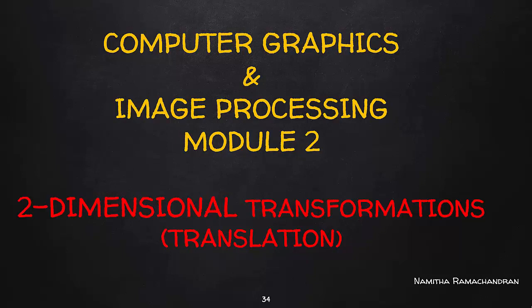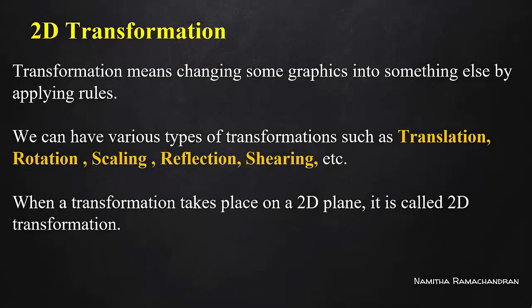Transformations — we use these to change the shape of an object. We consider an image or object and apply different types of changes. In 2D transformation, we have five types: Translation, Rotation, Scaling, Reflection, and Shearing. The basic transformations are translation, rotation, and scaling.